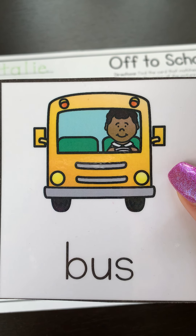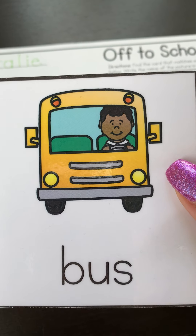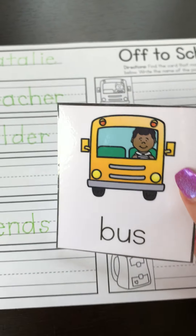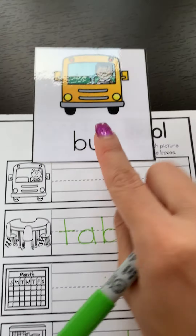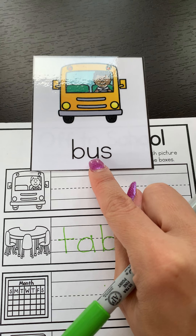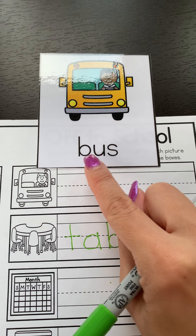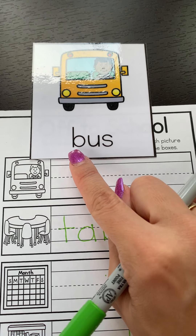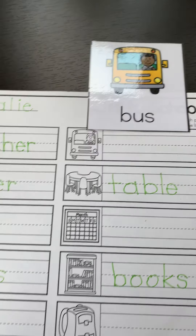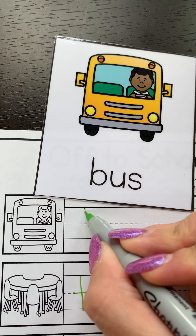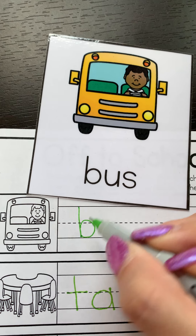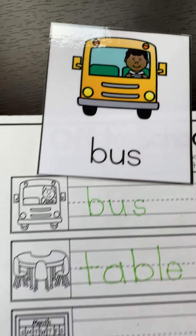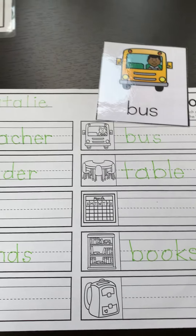A bus is sometimes how you get to school and how you get home. And when we go on field trips, we will take a bus. B, U, S. Bus. B is a skyline letter. B, U, S. Bus.